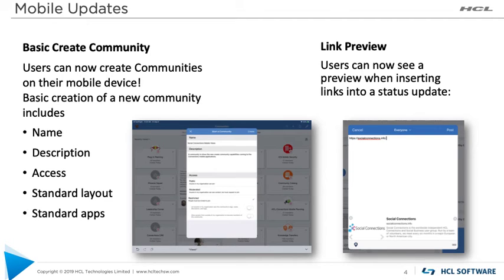Another feature we're adding in the CR6 timeframe on mobile is the ability to paste a link or URL into a status update on your mobile device, and then Connections will automatically render a preview within your status update. Users who are following you will see the rendering of the URL preview in that status update.